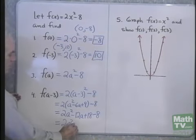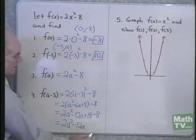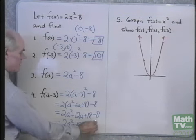And what's this? 2a squared minus 12a plus 18 minus 8. So 2a squared minus 12a, and let's see if I can get this right, plus 10. Does that look right?